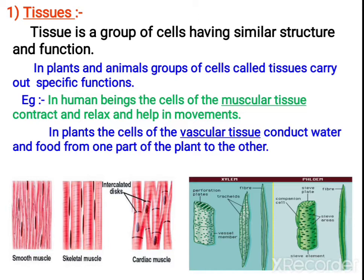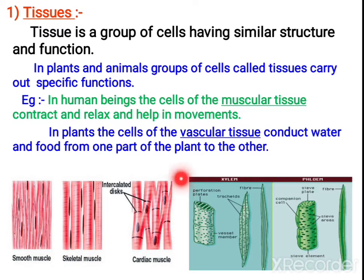Let us take one example from animals. In human beings, the muscular tissue contracts and relaxes. There are different types of muscle cells — muscular tissue that is smooth muscle, skeletal muscle, and cardiac muscle. But anyhow, all together you call them as muscular tissue.